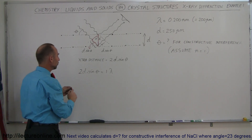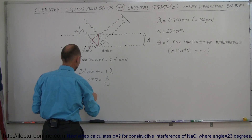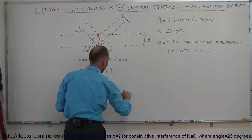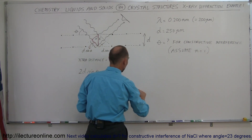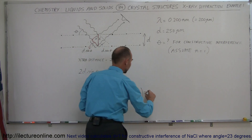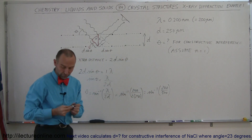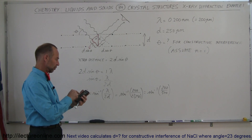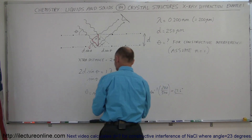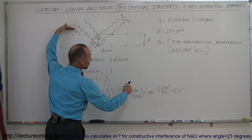So let's solve for this angle first. The sine of theta equals the wavelength lambda divided by two times the separation distance. Therefore, theta equals the arc sine of lambda divided by 2D, which is the arc sine of 200 picometers divided by two times 250 picometers — so the arc sine of 200 over 500, which is the arc sine of 0.4. Using a calculator, we get 23.6 degrees.